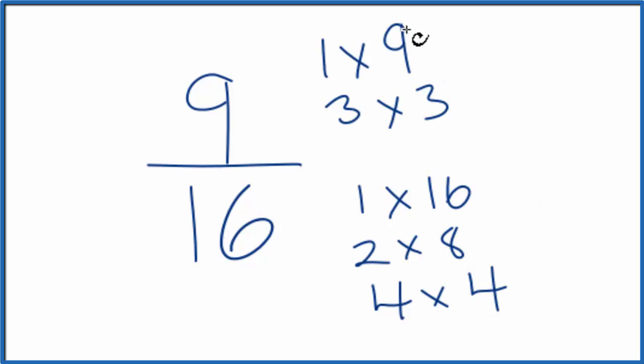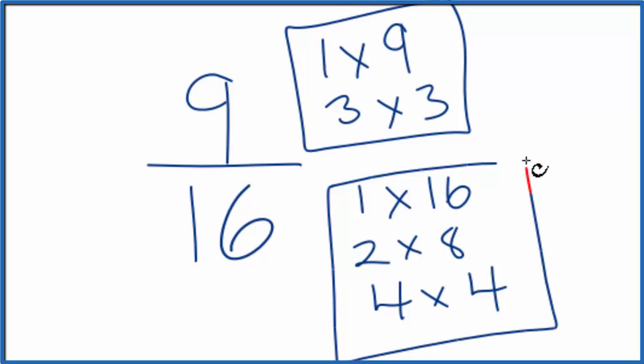So when I look for a common factor here in the numerator and the denominator, the only thing I see that's common is 1. And that means we can't reduce this any further.